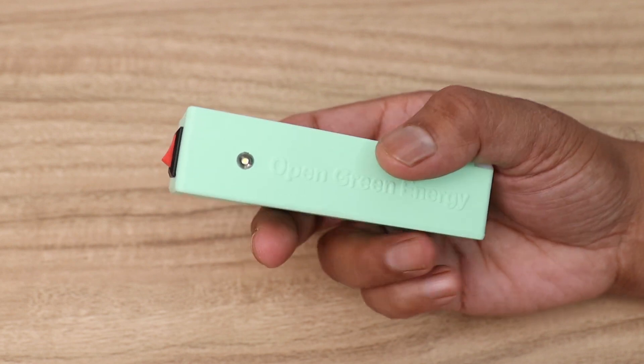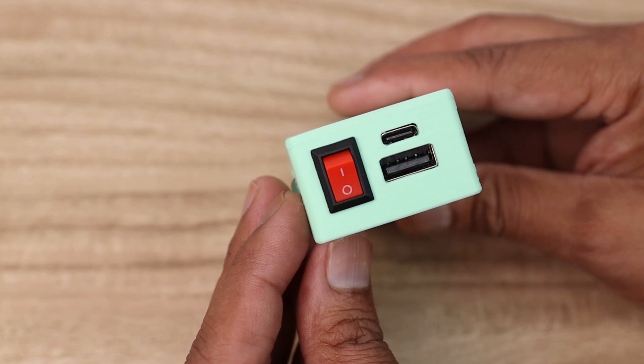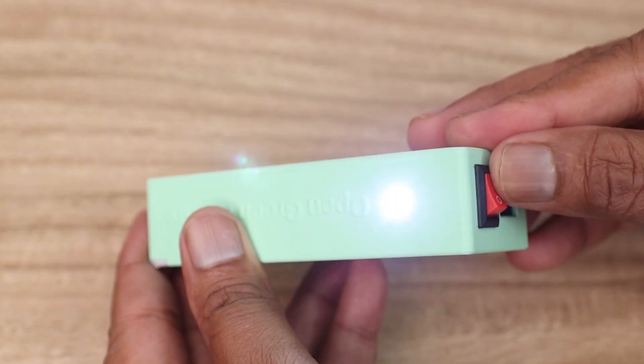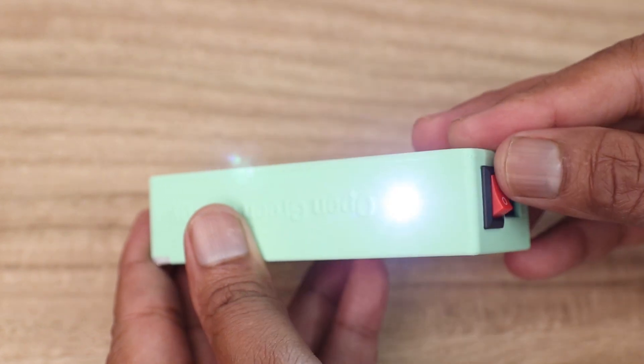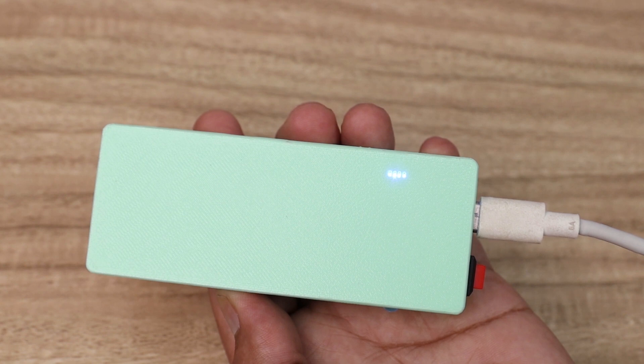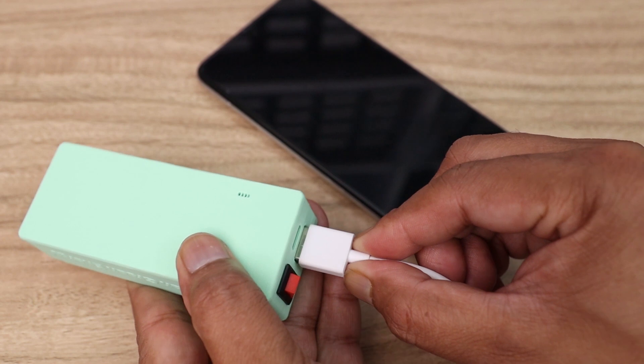Now our power bank is ready for final testing. Switch on the rocker switch to test the flashlight. You can charge the power bank by connecting it to a USB power source. Similarly, you can test the output function by connecting it to a smartphone.